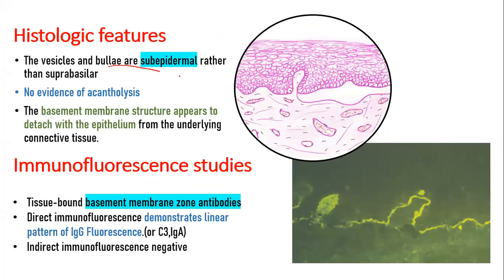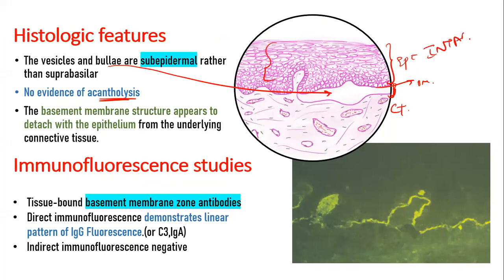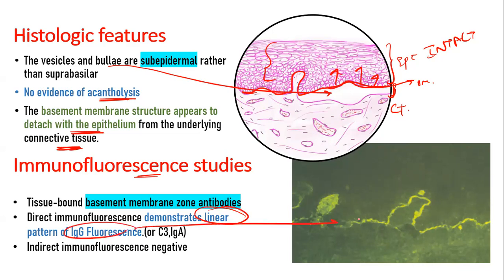Histologically, the vesicles and bullae in cicatricial pemphigoid are subepidermal, with no evidence of acantholysis. The epithelium appears intact. The basement membrane appears to detach with the epithelium from the underlying connective tissue. Immunofluorescent studies demonstrate a linear pattern of IgG fluorescence along the basement membrane zone.